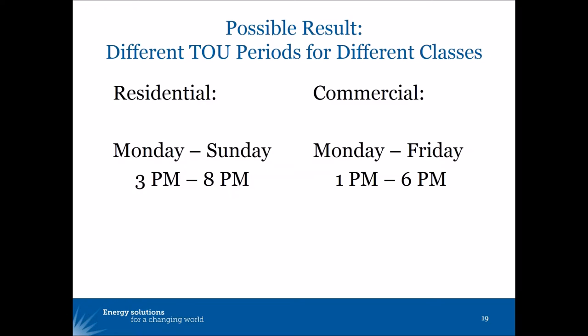I actually worked with one utility that ran into this problem — their residential circuits were really groaning on weekend afternoons. When they introduced the residential time of use rate, primarily for the benefit of electric vehicle owners, they decided to keep the weekends included in the on-peak period. The next question is, how long should the on-peak period be?